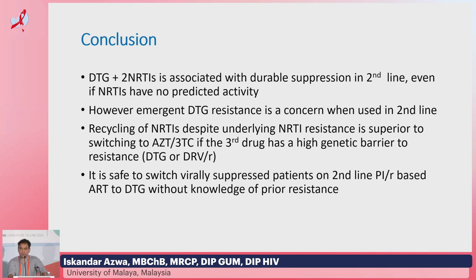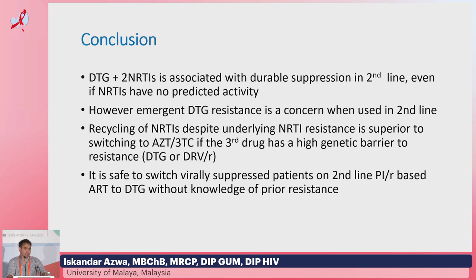In conclusion: two NRTIs plus dolutegravir is associated with durable suppression in second line even if NRTIs have no predicted activity, supporting recycling of nucleosides. However, emergent dolutegravir resistance is a concern when used in second line, which has not been shown in patients on first-line therapy. Recycling nucleosides despite underlying NRTI resistance is not just equivalent but superior to switching to AZT/3TC, if the third drug has a high genetic barrier — either dolutegravir or darunavir. It is safe to switch virally suppressed patients on second-line PI-based ART to dolutegravir without knowledge of prior resistance. Thank you very much.